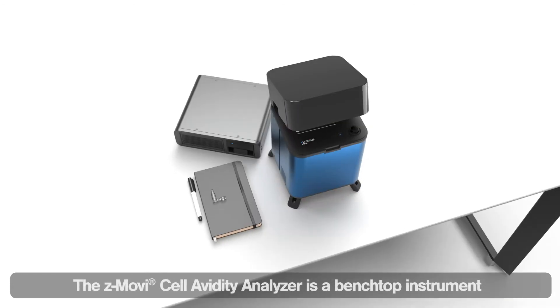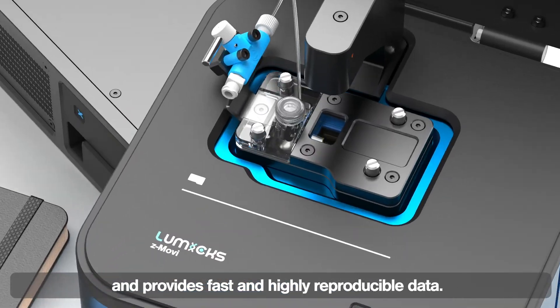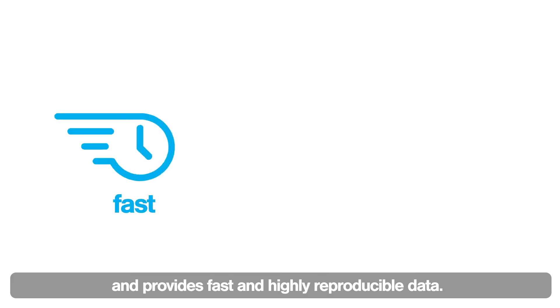The z-Movi Cell Avidity Analyzer is a benchtop instrument that measures the cell avidity and provides fast and highly reproducible data.